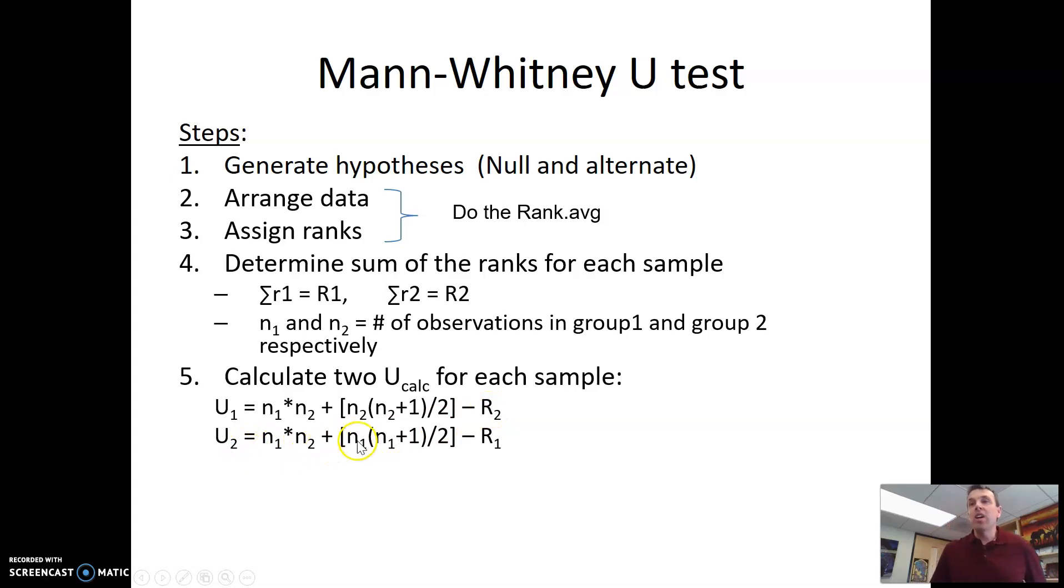u2 is the same thing, except this time after the n1 times n2, we're focusing more on n1 times n1 plus 1 over 2 minus r1. So basically, the only thing you really have to consider is for u1, you're using the replicates for group 2 in this part here, and minus the rank average sum for group 2. And for u2, you're using more of the replicates for n1, the replicate numbers for n1, minus the sum rank for r1. This will become a little bit more clear as we go through.